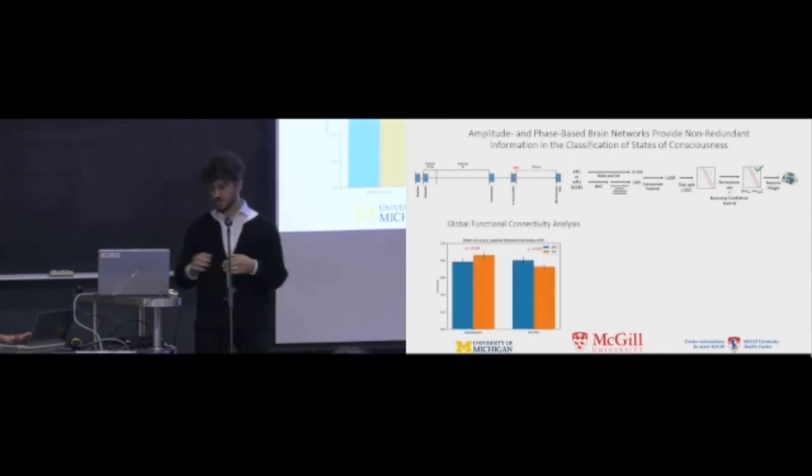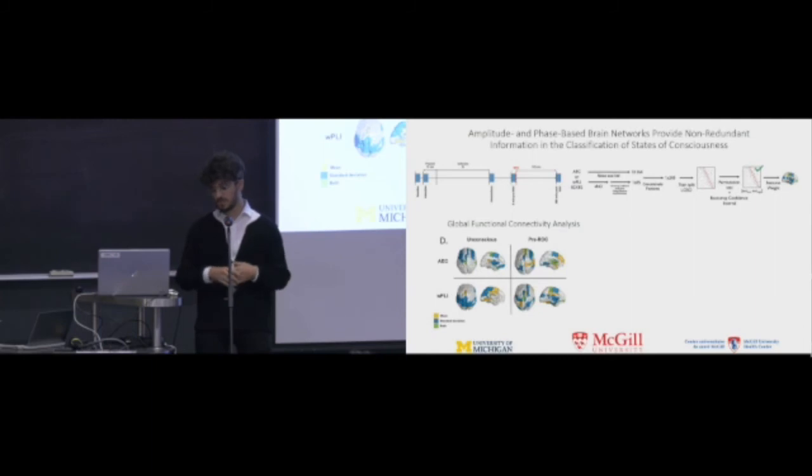The result for the functional connectivity analysis, which is the mean and standard deviation of the global connectivity, is that amplitude-based graphs are better at detecting deep stage of unconsciousness and phase-based graphs are better at detecting light stage of unconsciousness. And if we look at the feature weights now, we can see different patterns, even though they come from the same signal, in both modality and in both states.